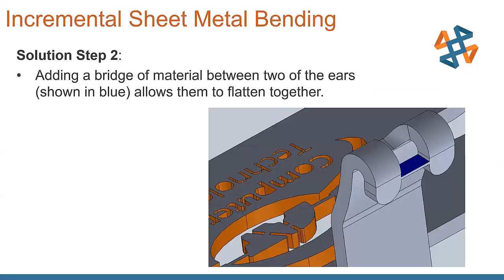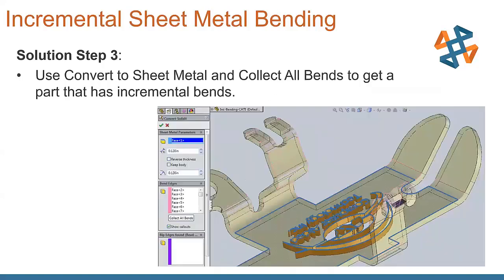We also add a bridge of material between the two ears. It's shown in blue there, and this simply allows those two items to be flattened together, and then you can go back and cut that little bridge out later on.